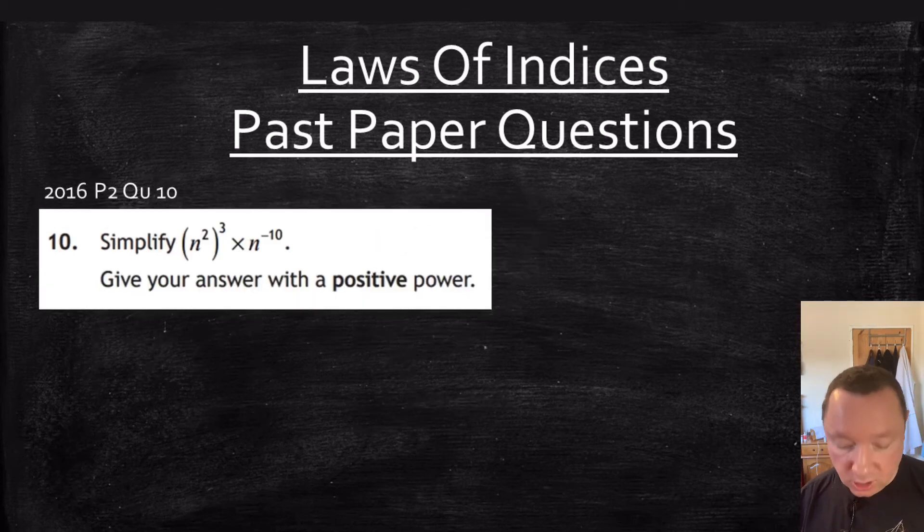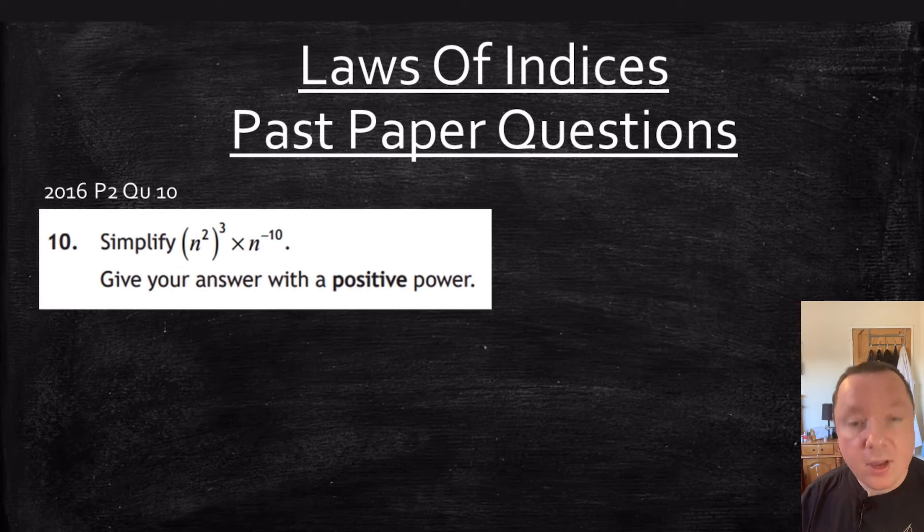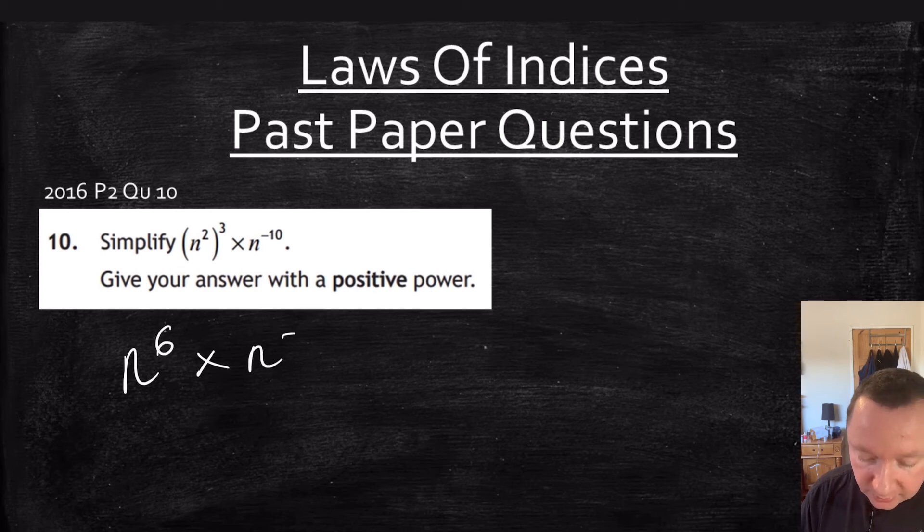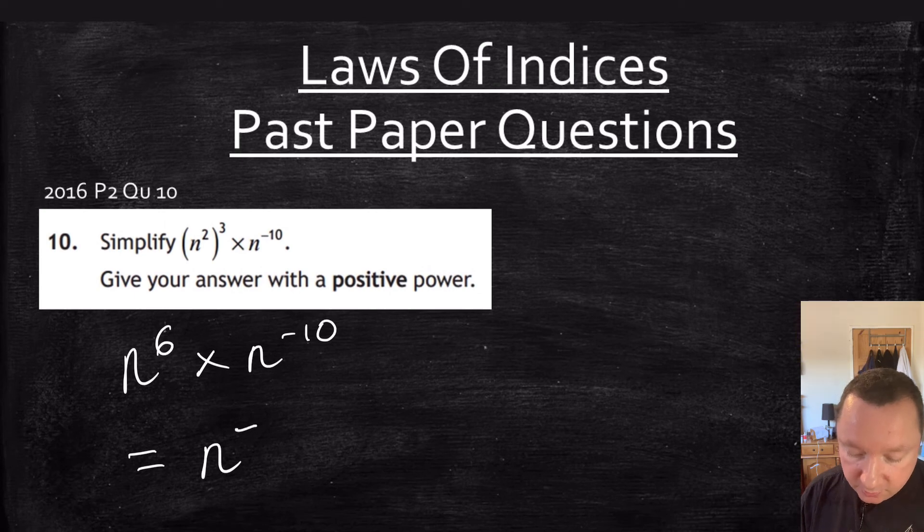2016 paper 2 question 10: Simplify n squared cubed times n to the minus 10. Give your answer as a positive power. Let's start with n squared cubed. That gives me 2 times 3 is 6, so n to the 6, times n to the minus 10. Times the indices means we add the powers. So that gives me n to the 6 take away 10, which is negative 4.